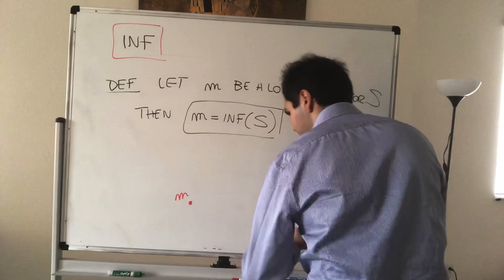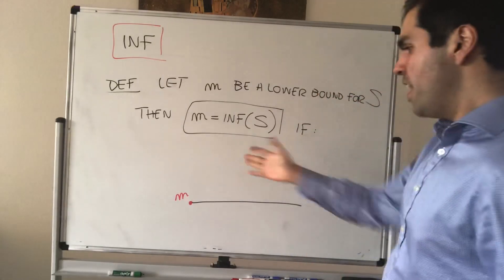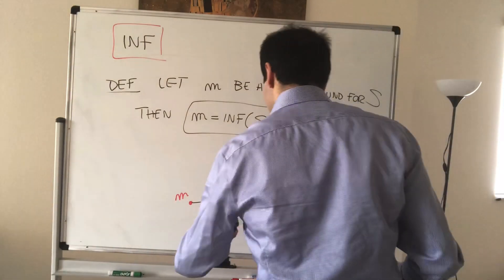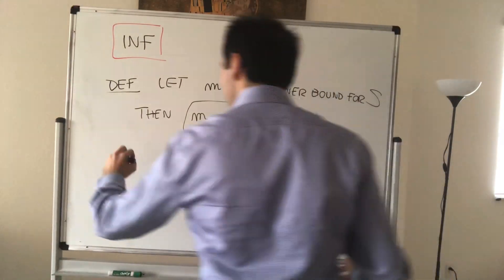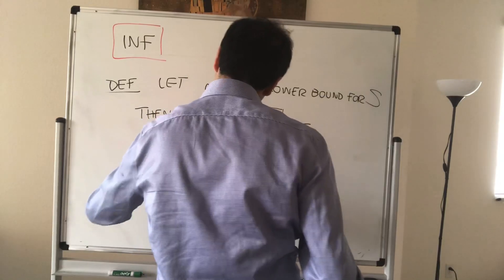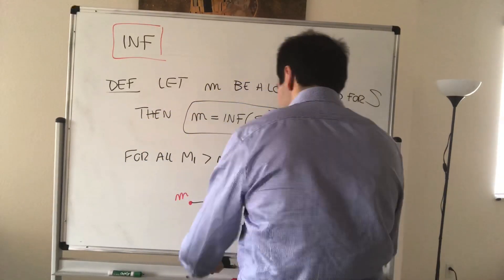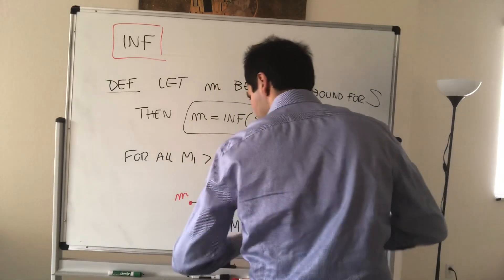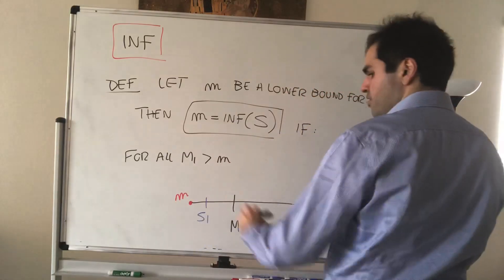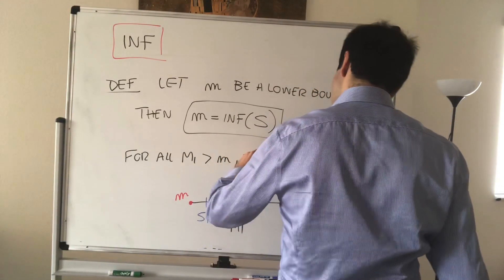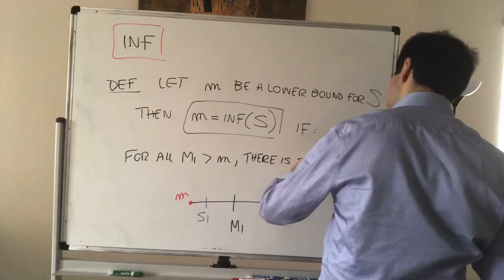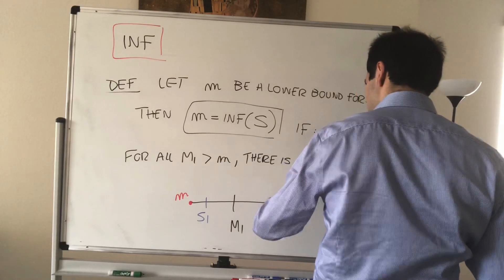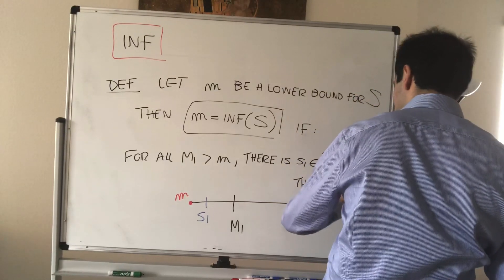Again, this is S and this is M. Whenever you take a number bigger than little M, so if for all M1, M1 bigger than M, there is some S1 in S that is smaller than M1. S1 is strictly less than M1.